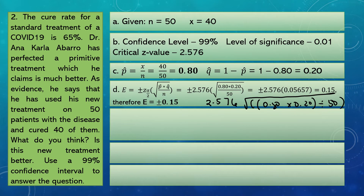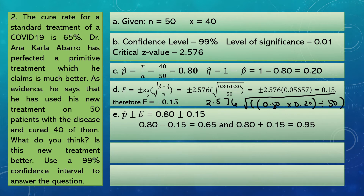To find the confidence interval, we compute P-hat plus or minus E: 0.80 plus or minus 0.15. Adding and subtracting gives us 0.65 and 0.95. So our confidence interval estimation for the population proportion is 0.65 to 0.95. For the length of confidence interval, LCI equals 2E: 2 times 0.15 equals 0.30.